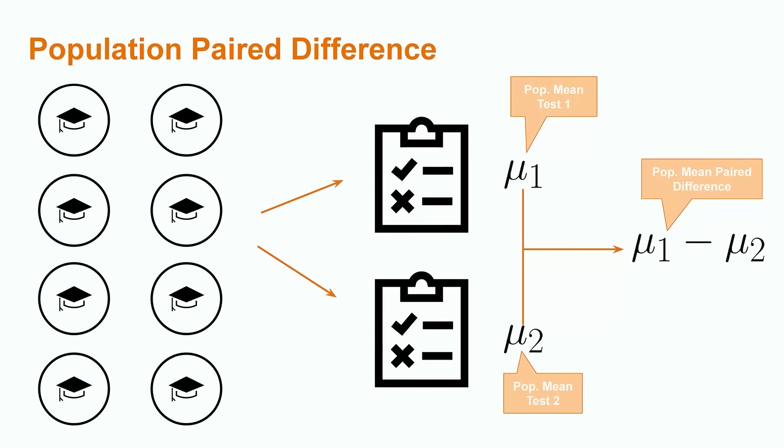If instead of one student score, the average were taken of all the student scores for each exam, the differences in the averages — which we can refer to as mu1 and mu2 respectively — would yield the population paired difference mean mu1 minus mu2. This result can be important when getting a sense of population trends.